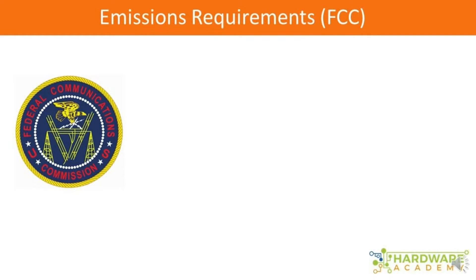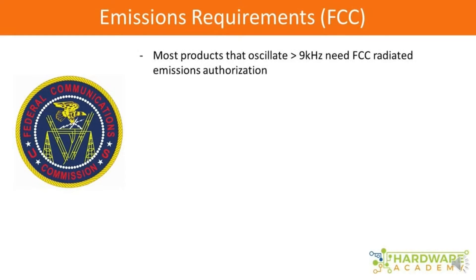Any product that oscillates above 9 kHz is going to require FCC radiated emissions authorization. It doesn't have to be a product that has a wireless radio in it — it can be something really simple. Most products are going to have something oscillating above 9 kHz. If it has any type of microcontroller or microprocessor, it's going to be oscillating in megahertz or gigahertz. For most products, you're just going to need to assume that you're going to require some type of FCC authorization.